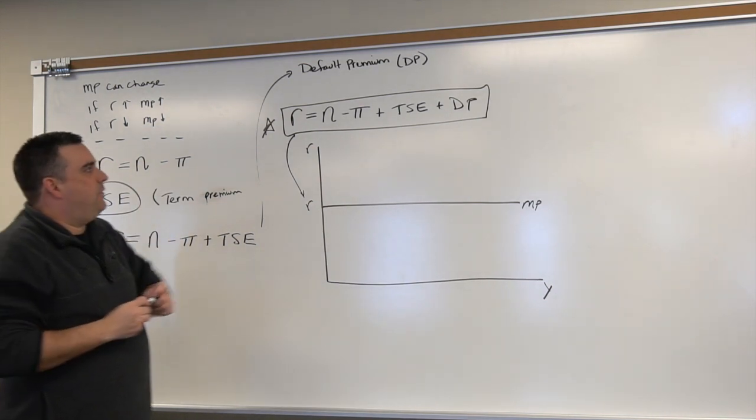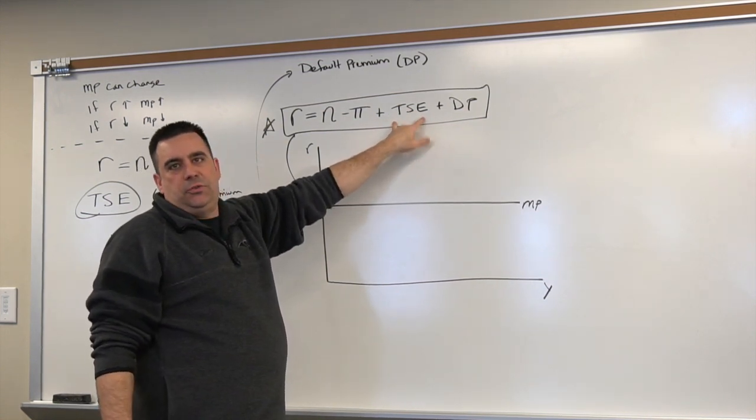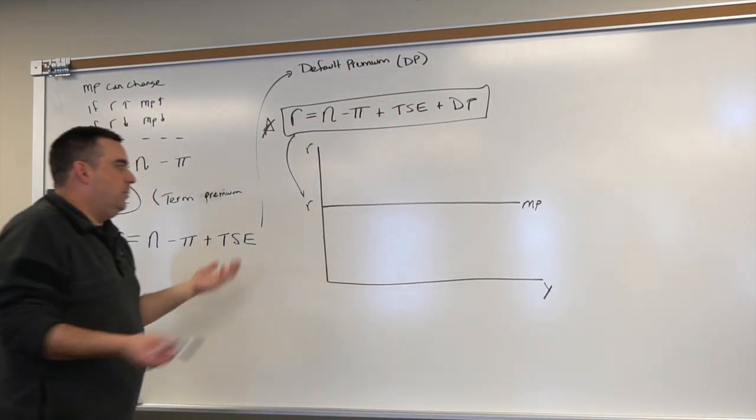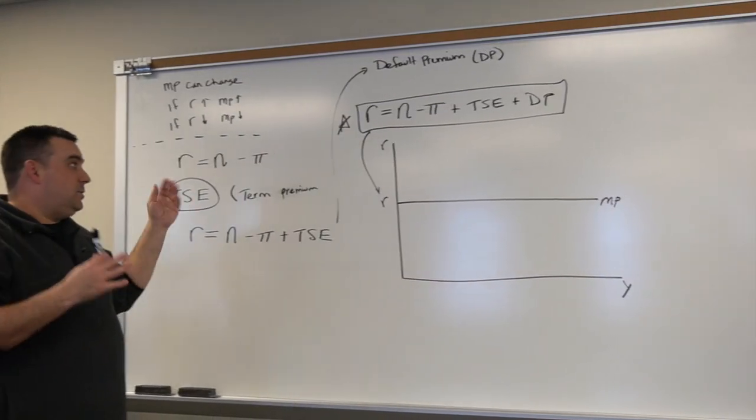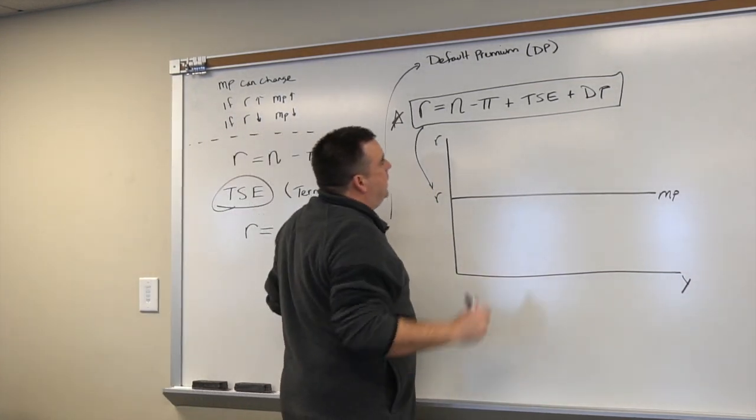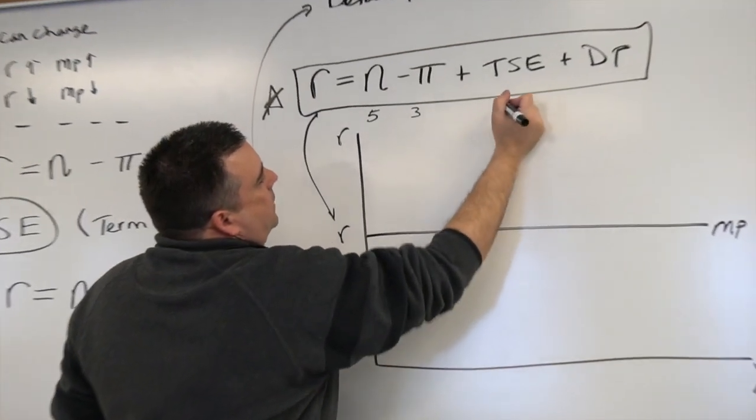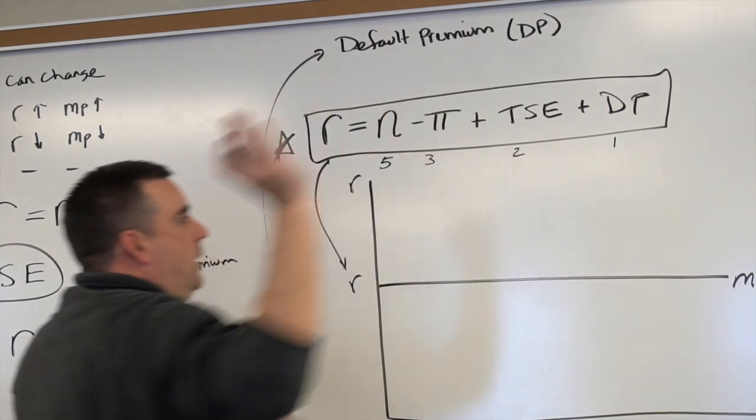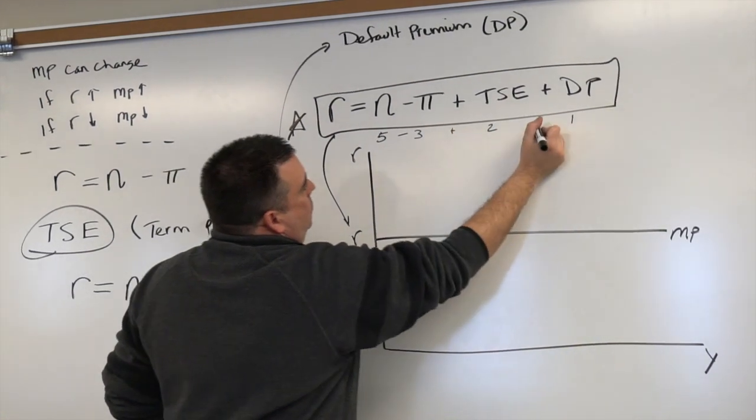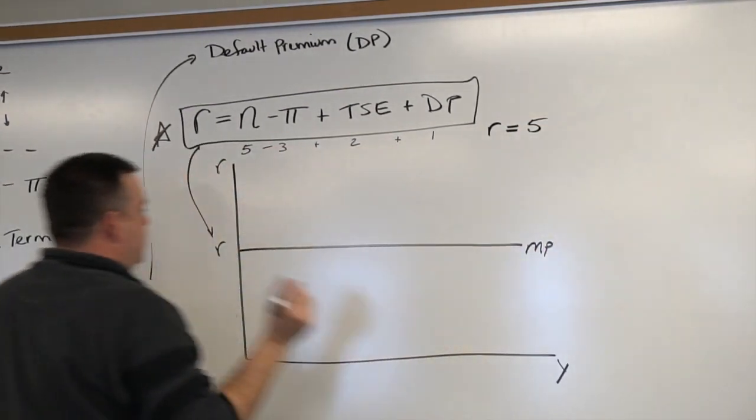So it's this calculation that is shown right here. Now again, the Federal Reserve tracks this. They have a neat way of tracking the deviation between different years of terms, and that difference is the term premium. The Federal Reserve actually accounts for all of this, but it does change some of those model shifting effects. So let's hypothetically make up some values: the nominal interest rate is 5, the inflation rate is 3, TSE is 2, and the default premium is 1. I can solve out R by saying 5 minus 3 plus 2 plus 1, and I would get R equal to 5. So that gives me this value here.